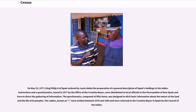On May 25, 1577, King Philip II of Spain ordered by Royal Cedula the preparation of a general description of Spain's holdings in the Indies. Instructions and a questionnaire, issued in 1577 by the Office of the Cronista Mayor, were distributed to local officials in the Viceroyalties of New Spain and Peru to direct the gathering of information. The questionnaire, composed of 50 items, was designed to elicit basic information about the nature of the land and the life of its peoples. The replies were written between 1579 and 1585 and were returned to the Cronista Mayor in Spain by the Council of Indies.